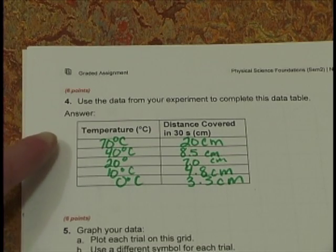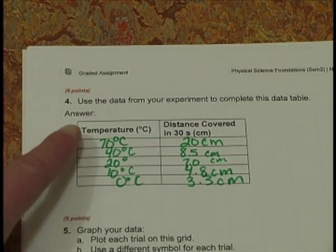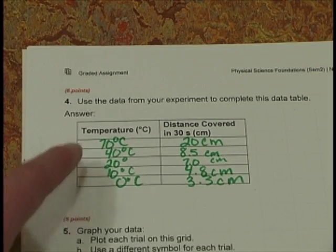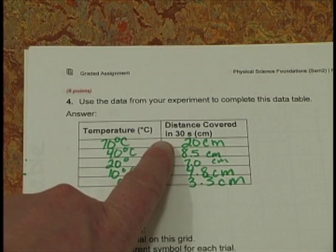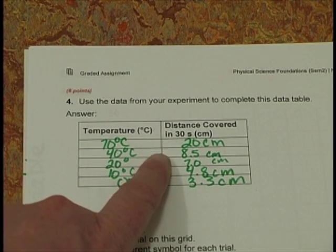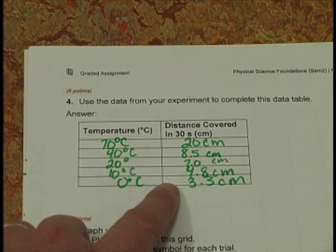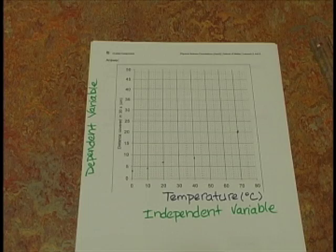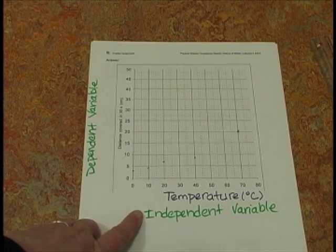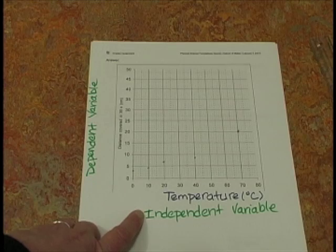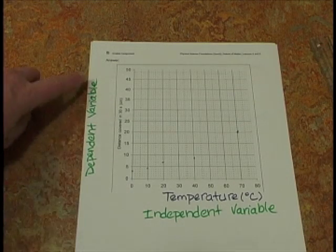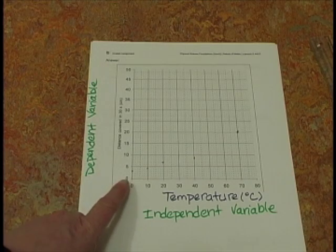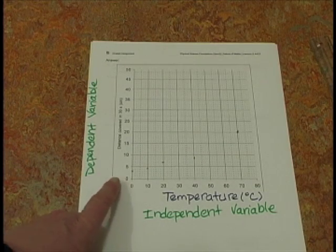As we went through the experiment, I wrote down the temperature we were working at and the distance the liquid ran down, measured on the ruler. Let's remember that graphs have an independent variable on the horizontal axis and a dependent variable on the vertical axis.